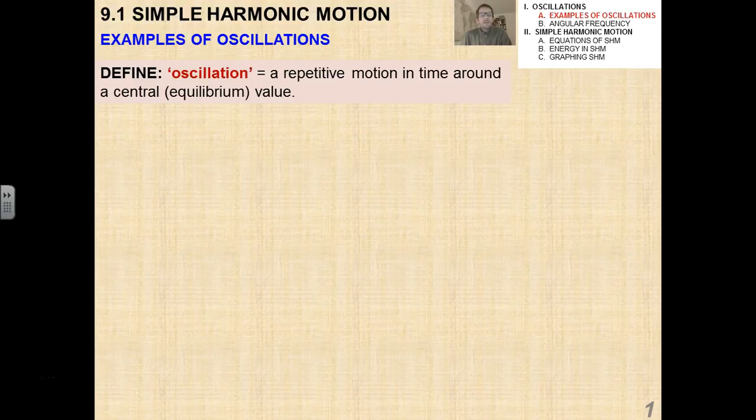Hello, higher-level physics students. This is the first video in topic 9.1. We're going to revisit simple harmonic motion. I know we studied this as a core topic with the standard-level kids a while ago. What we're going to do in this topic, in our higher-level treatment, is we're going to get in much more analytical detail and derive the mathematical models for simple harmonic motion.